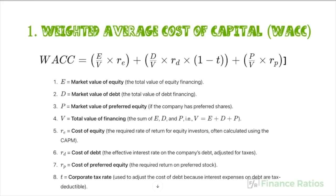V is total value of financing, Re is cost of equity — the required rate of return for equity investors, often calculated using the CAPM. Rd is cost of debt — the effective interest rate on the company's debt adjusted for taxes. Rp is cost of preferred equity, and T is the corporate tax rate, used to adjust the cost of debt because interest expenses are tax deductible.